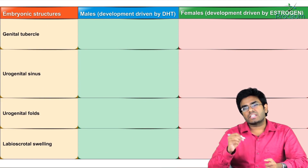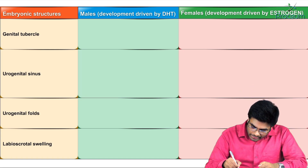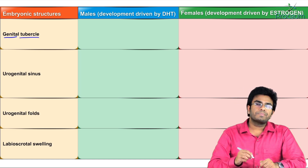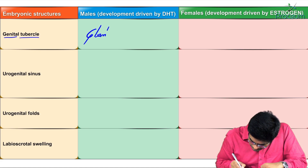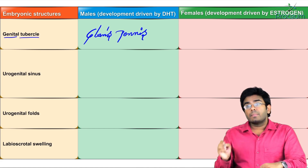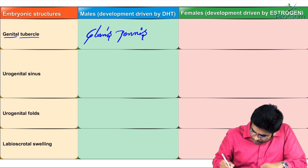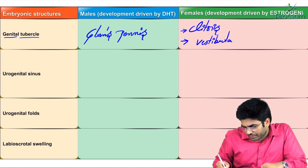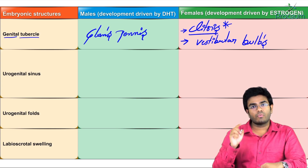The genital tubercle — in males, under the influence of dihydrotestosterone, it will become glans penis. But the same genital tubercle, if there is no dihydrotestosterone in females, it will become clitoris and also vestibular bulbs. The clitoris is a derivative of the genital tubercle.